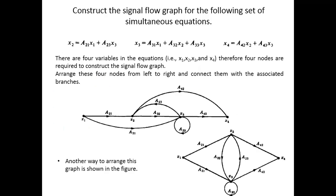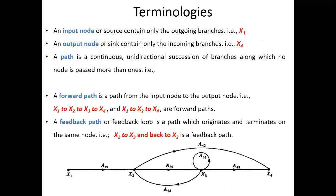Now, constructing a signal flow graph for a set of simultaneous equations: x2 = a21·x1 + a23·x3, where a21 and a23 are the branch gains and x1 and x3 are the nodes. In the figure, the input node is x1, the output node is x4. A path is a continuous, unidirectional succession of branches — x2 and x3 are intermediate nodes with branch gains a21 and a32.